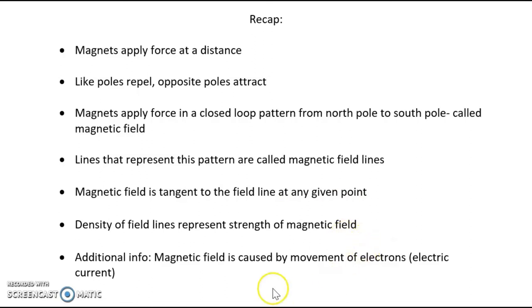One piece of information I forgot to mention: magnetism is caused by the movement of electrons or electric current. So when electricity flows, it creates a magnetic field.